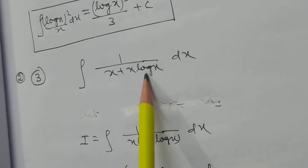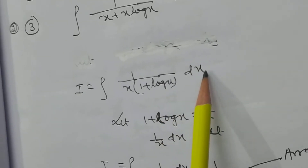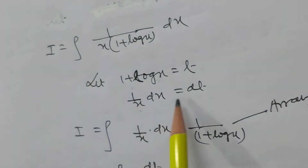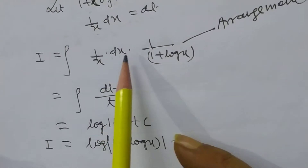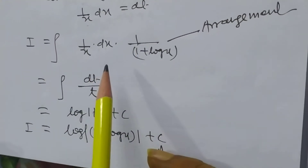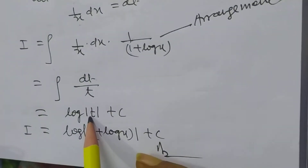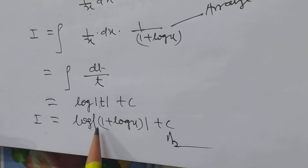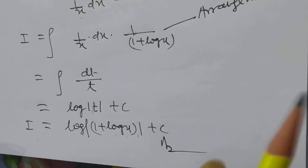Integration of 1/(x + x·log x) dx: take common x, giving integration of (1 + log x)/x · 1/(1 + log x) dx. Let 1 + log x = t, so 1/x dx = dt. Arranging, I equals integral of dt/t, so integration equals log|t| + c, that is log|1 + log x| + c.